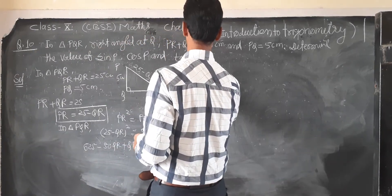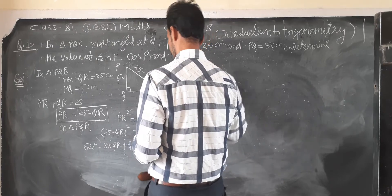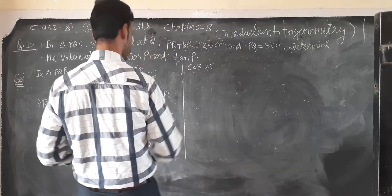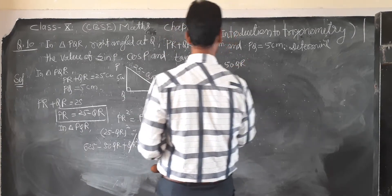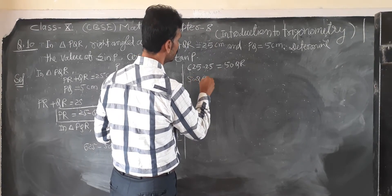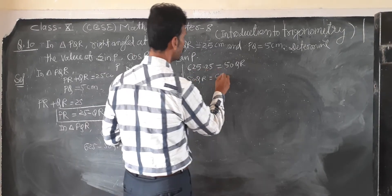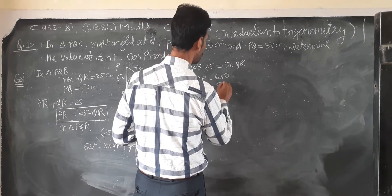So 625 minus 25, QR QR cut, then equal to 50 QR. Then this is 600, so 50 QR equal to 625. So this is 600. Then value of QR equal to 600 upon 50.